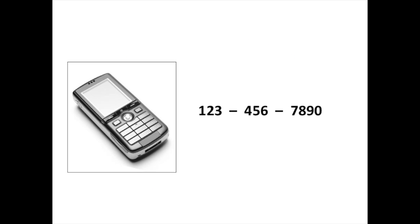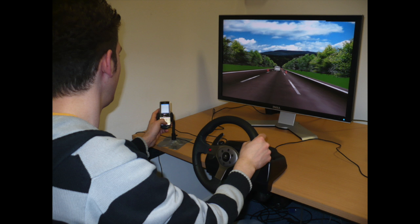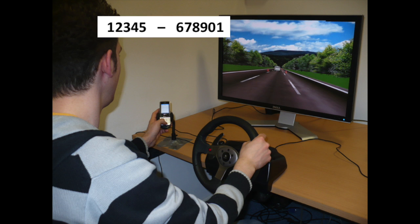But what do people do when this chunk of digits is long, and waiting for the natural breakpoint might be dangerous? In our study, participants had to dial a phone number that had 11 digits, which were clustered in one group of 5 digits and one group of 6 digits. At the same time, participants also had to steer a simulated vehicle such that it stayed in the middle of the road.